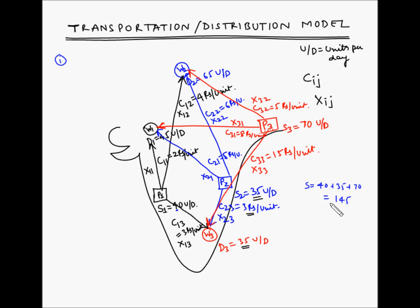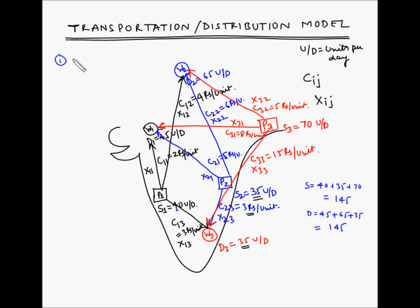This total supply should be the same as the total demand. Demand is equal to 45 plus 65 for the second warehouse, plus 35 for the third warehouse. So 65 plus 45 is 110, and 110 plus 35 is 145. This problem can be solved using the transportation model because it satisfies the first assumption: total supply is equal to total demand.